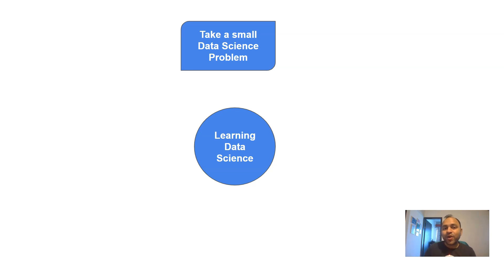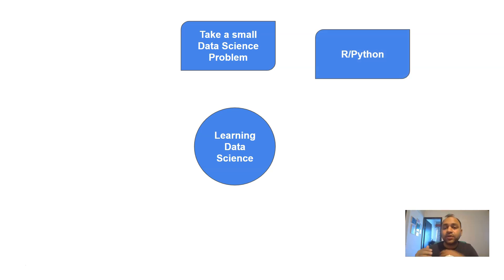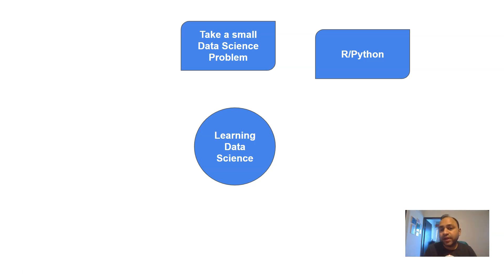Let's look at the next step: learning a programming language. There are various programming languages — Java, C, C++, Python, and R programming. The reason I focus on R and Python specifically is that these two languages have a lot of built-in machine learning libraries related to data science. Machine learning and data science are terms used interchangeably in the industry, and these languages make data science related work much easier.